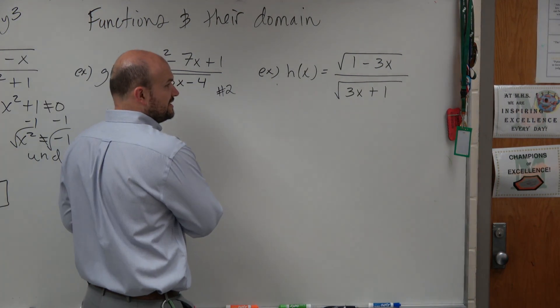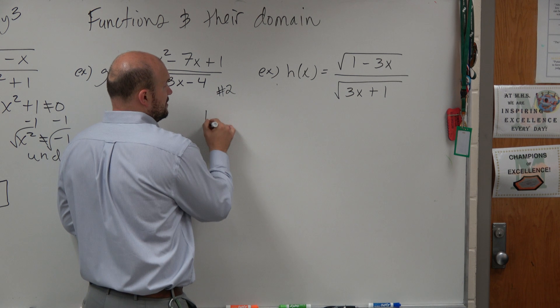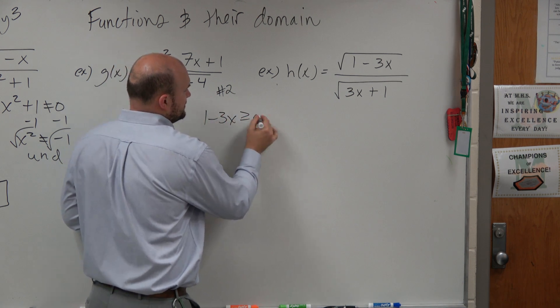You guys can see that there's kind of three constraints. First constraint is 1 minus 3x has to be greater than or equal to 0.